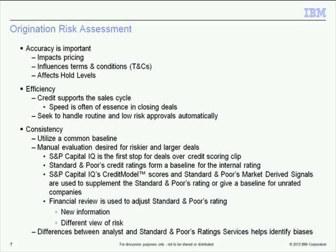After establishing the baseline, we use financial information and any other market information from the customer to validate we're comfortable with where those ratings are pointing — considering new earnings releases or industry changes — and let analyst experience play a factor in creating the final rating. On consistency: we compare what analysts come up with against S&P ratings and identify any biases. If an analyst has a bias, we encourage it if they have new information, and discourage it if not based on good facts. Using S&P as a benchmark allows us to identify that.